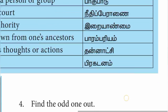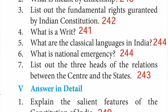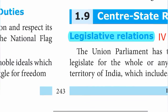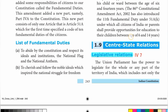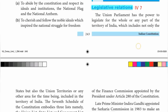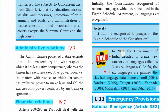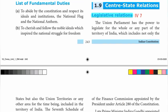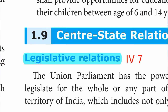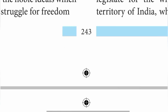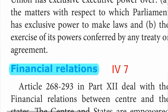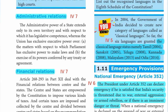Question number seven: list out the three heads of the relations between the centre and the states. The three heads are: legislative relations, administrative relations, and financial relations.